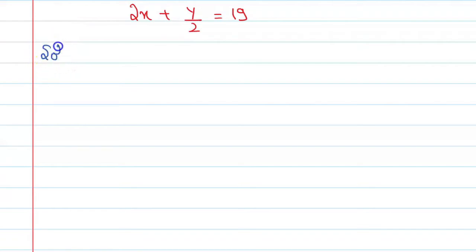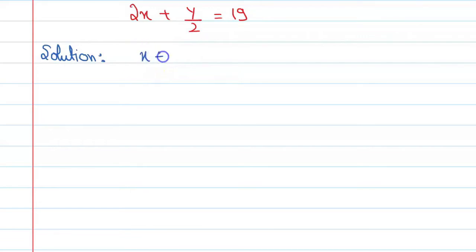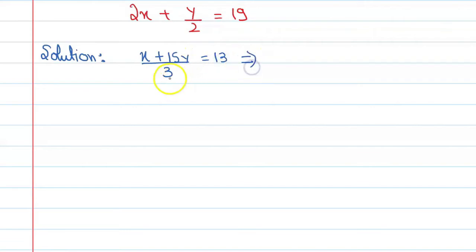We have to simplify it into general form. When you look at the first equation, you take x plus 15y upon 3, equal to 13. Solving this, we multiply through and get x plus 15y equal to 39. Say this is equation number 1.